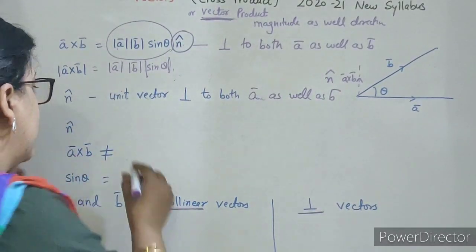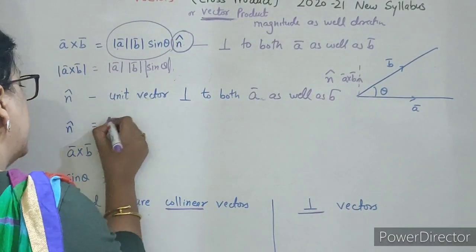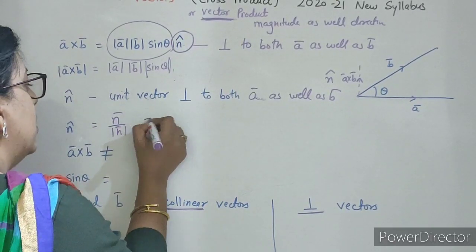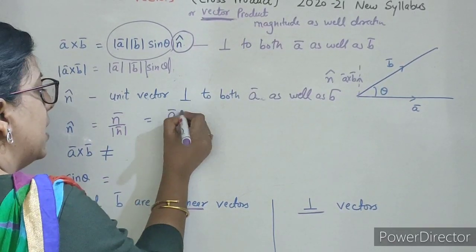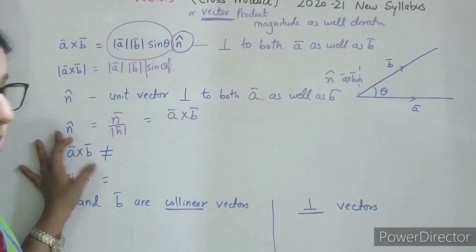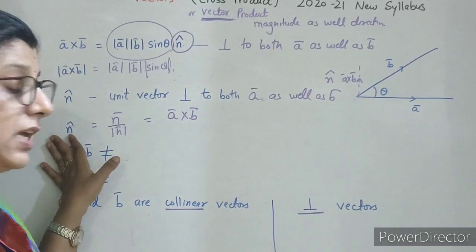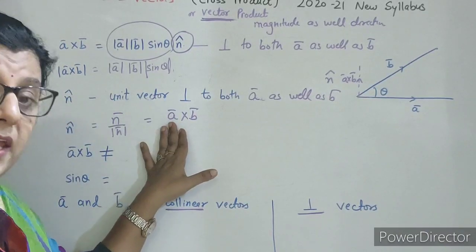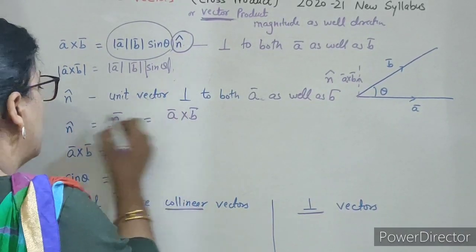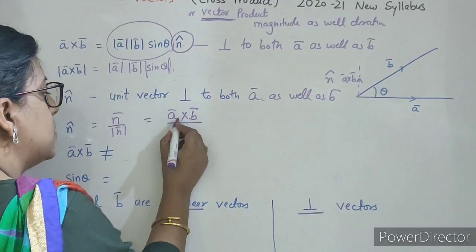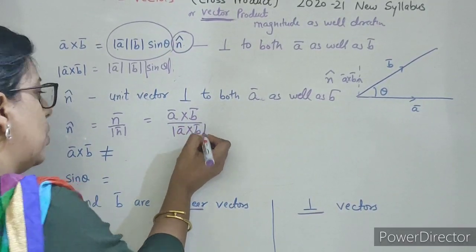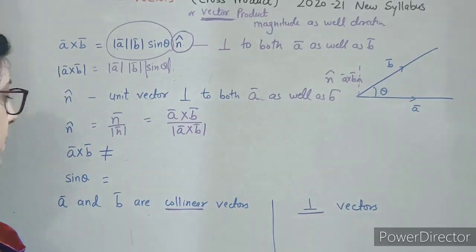N̂ kaise nikalenge? Vector upon its mod. Kya likhenge? A cross B, kyunki yeh n̂ ki direction — yeh kis ki direction represent karta hai? Vector A cross B ki. So n̂ kya ho jayega? A cross B upon magnitude of A cross B.